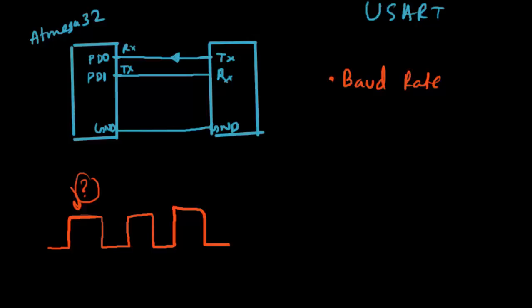This type of communication is asynchronous. There is also synchronous communication, but we won't cover that here. With UART, both devices agree to a common bit rate. Technically it should be called bit rate, but the term baud rate — which means signal changes per second — has been used for a long time. We are really concerned about how many bits we transmit per second.